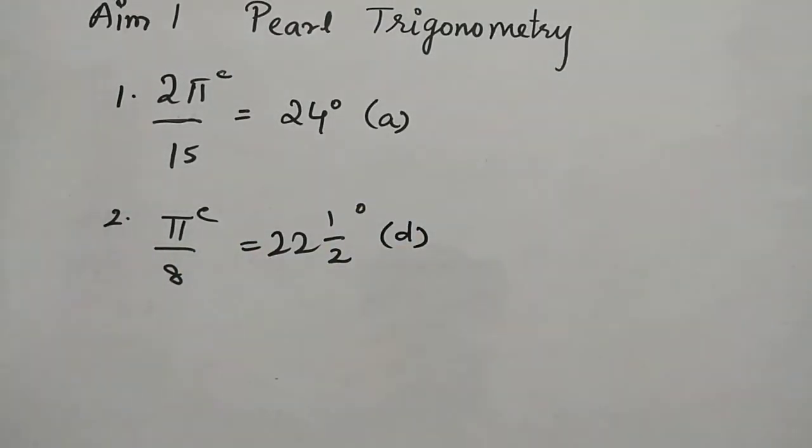Now third one, it is a statement type question. If 1 degree is equal to 0.01746 radians approximately, that is correct. Then statement B, 1 radian is equal to 57 degrees, 16 minutes and 20 seconds approximately. So both are correct, option A.